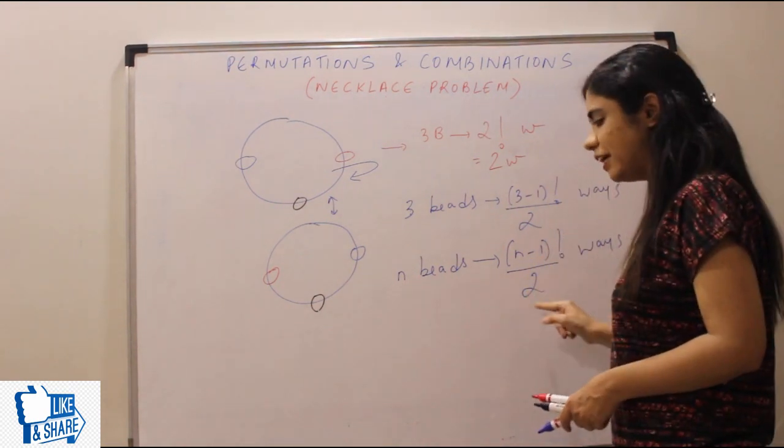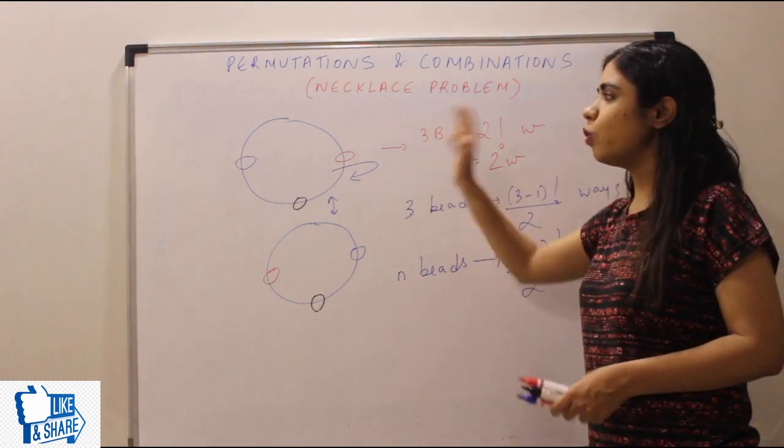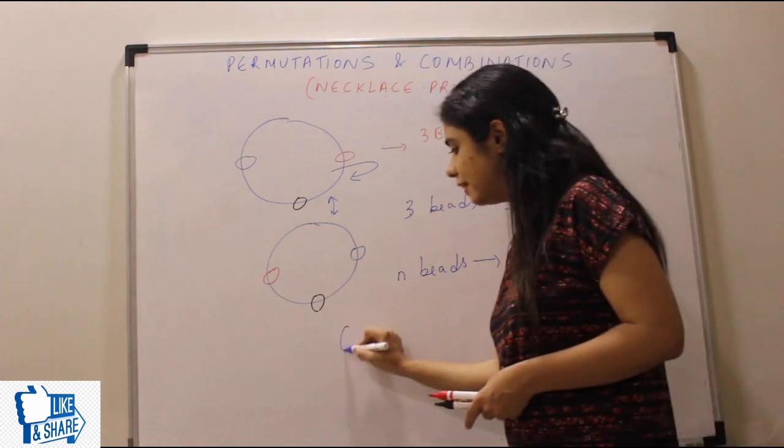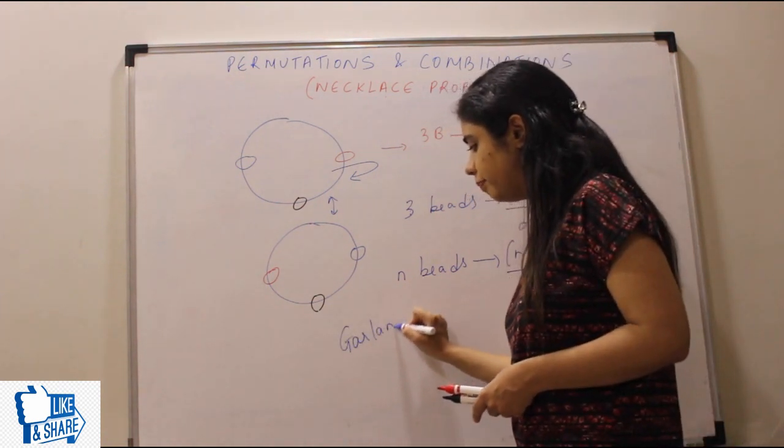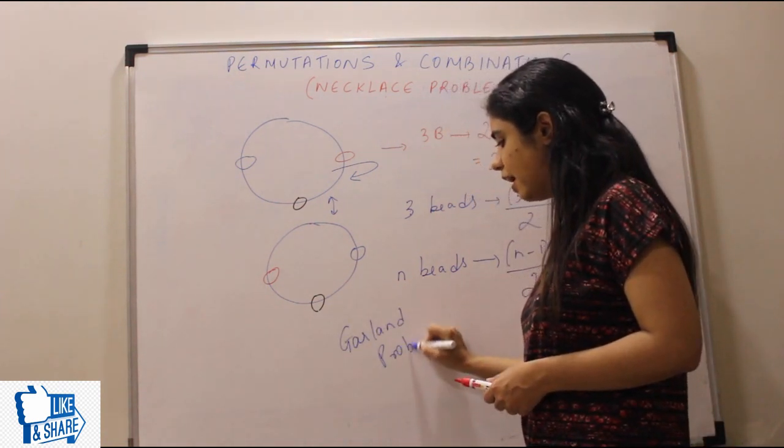That is the reason it's only n minus one factorial for people. But for beads, divide by two ho jata hai. This is also called as the garland problem.